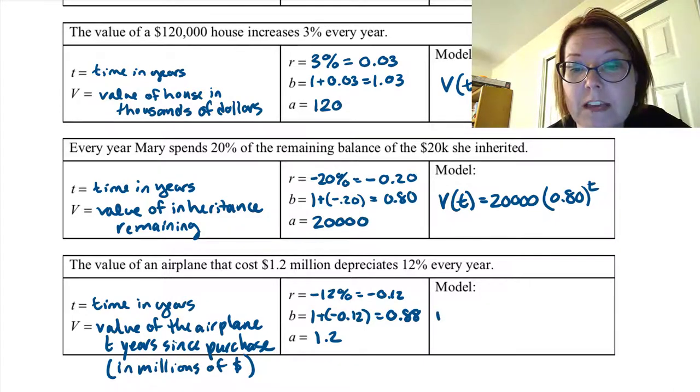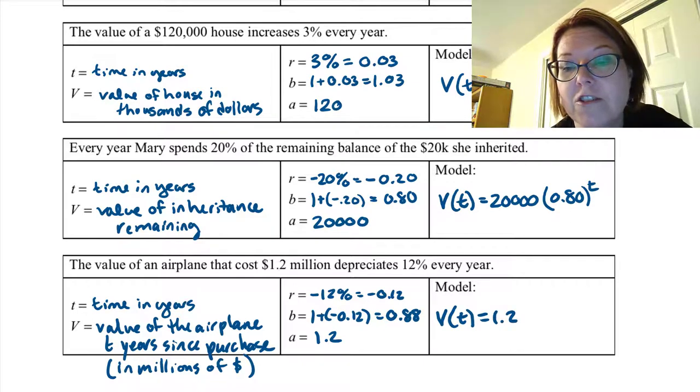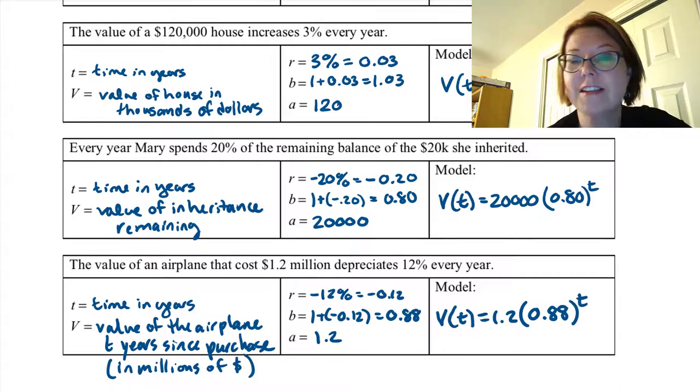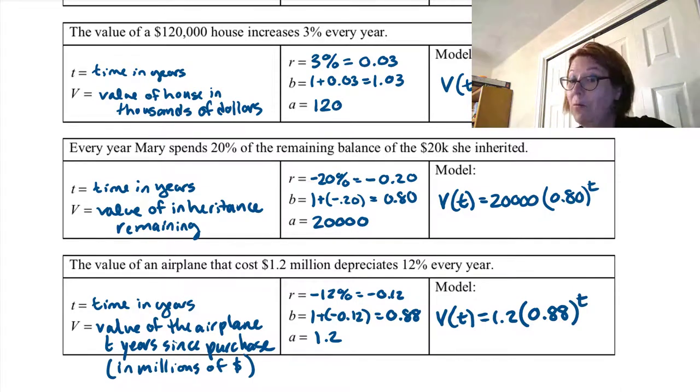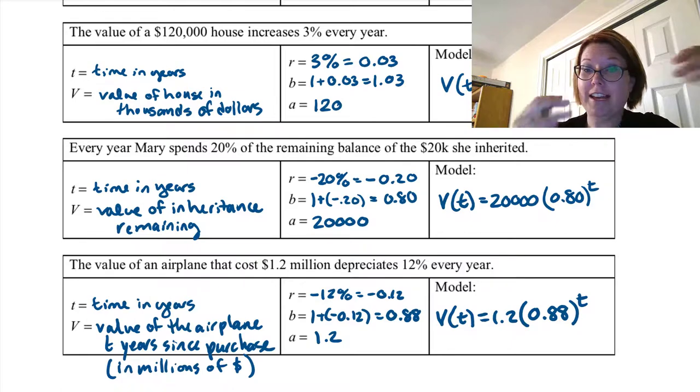Our model is going to be capital V of T equals 1.2. That's the initial value. Then left parenthesis 0.88, right parenthesis raised to the T power. Hopefully, you are now an exponential model making expert.